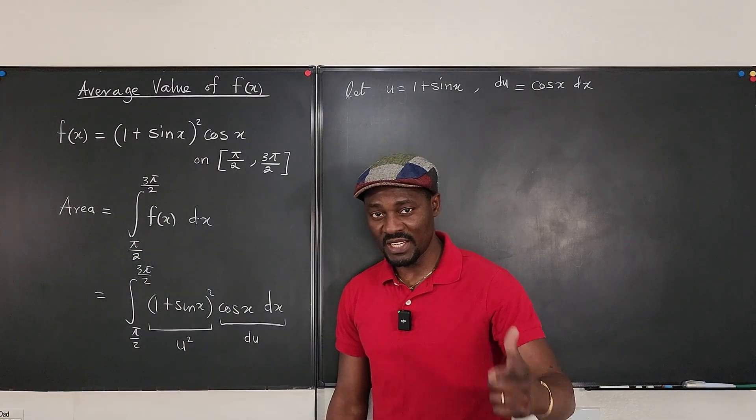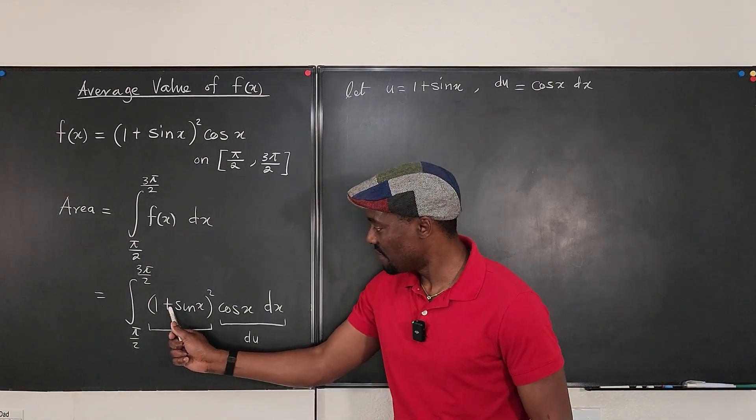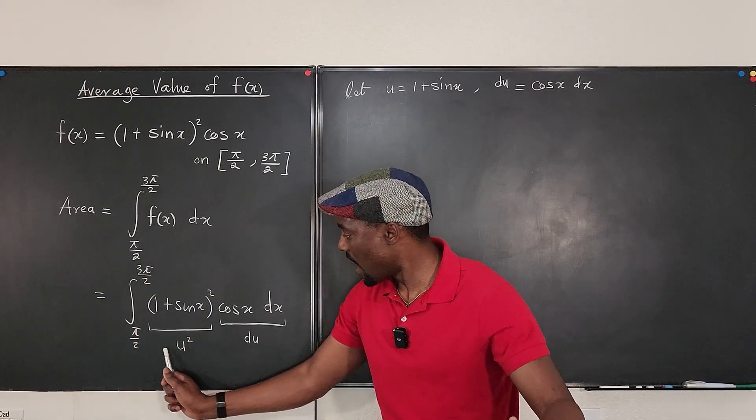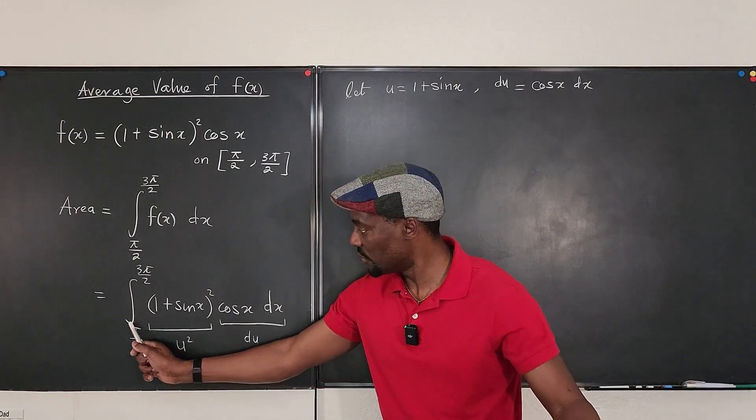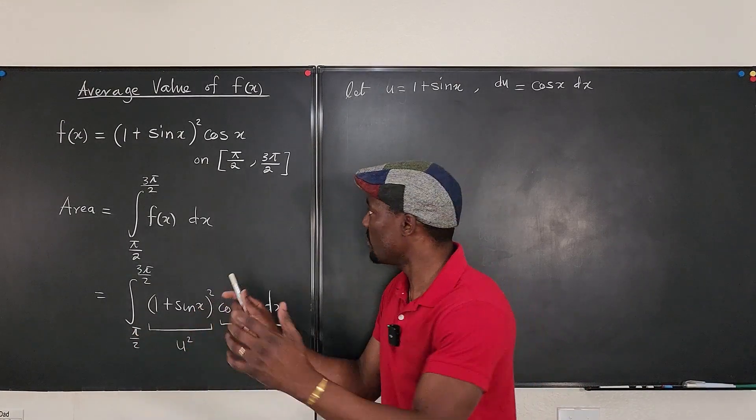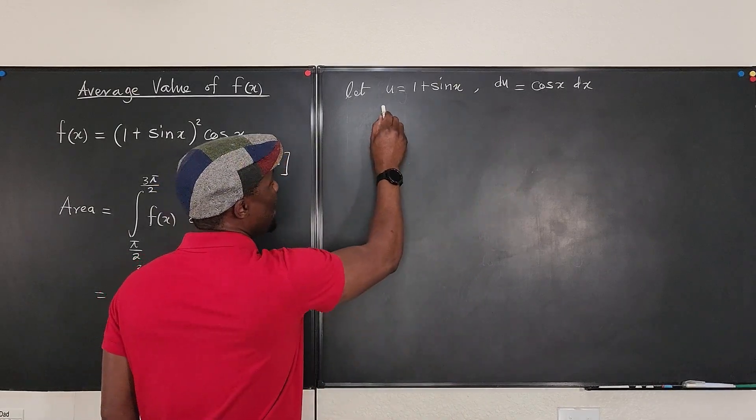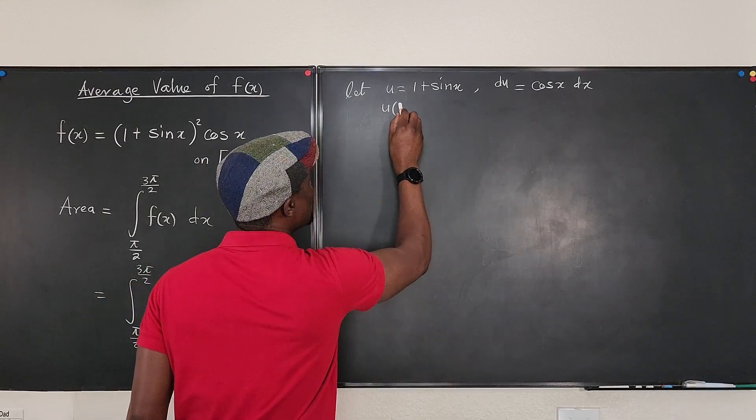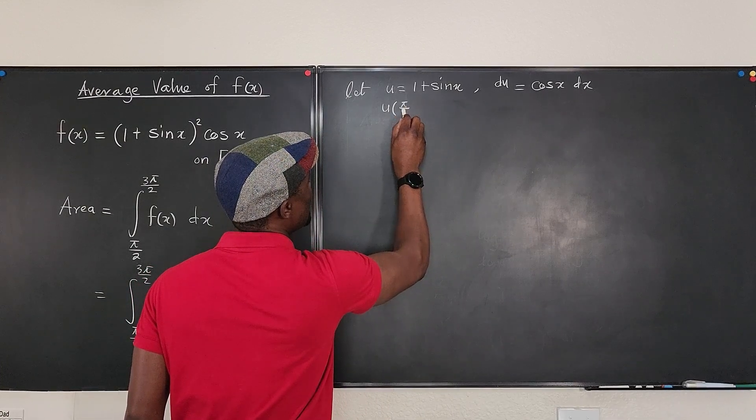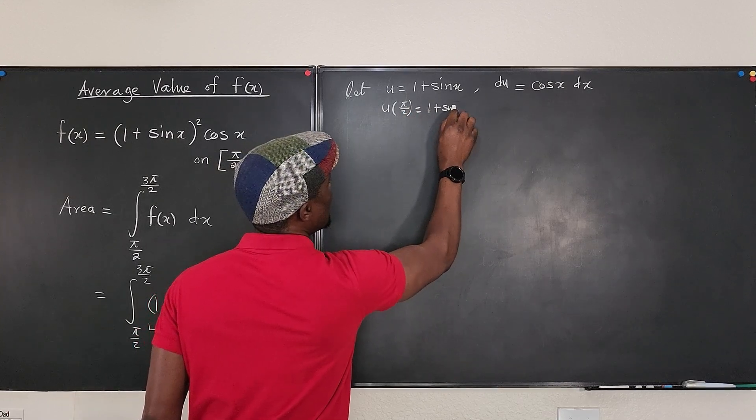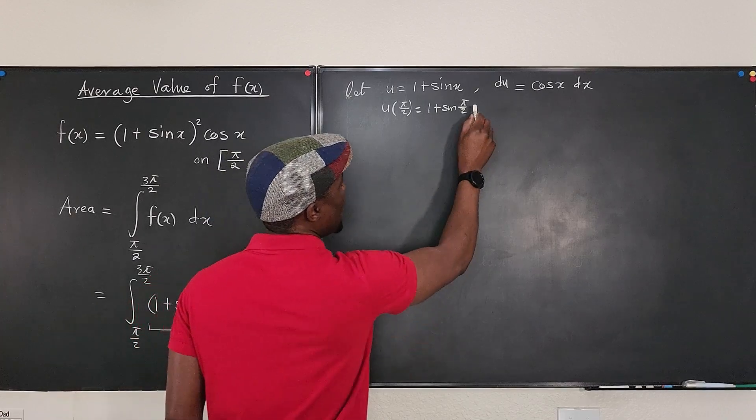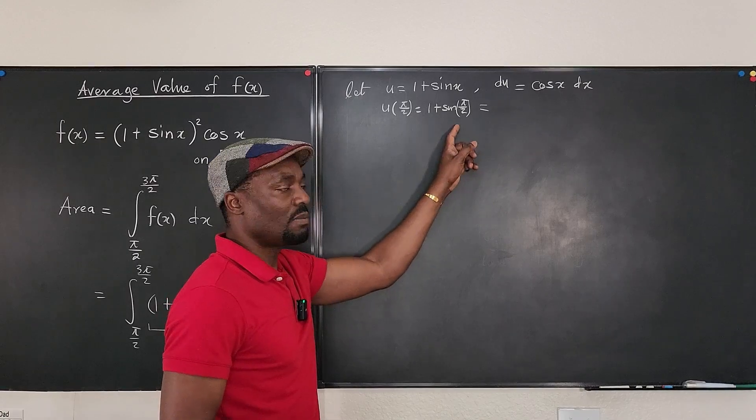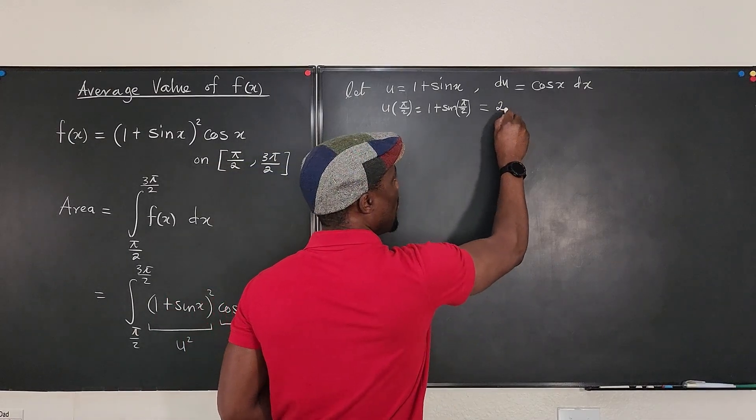There is one more thing that needs to be done. Because I have replaced the functions that were in terms of x with u squared and du, it is important to change the boundaries also. So, what is u when it is evaluated at pi over 2? u evaluated at pi over 2 will be equal to 1 plus sine pi over 2. And I know that sine pi over 2 is 1. What's 1 plus 1? That gives me 2.